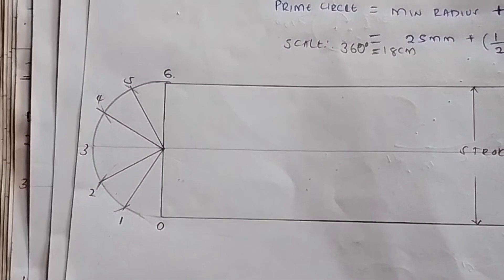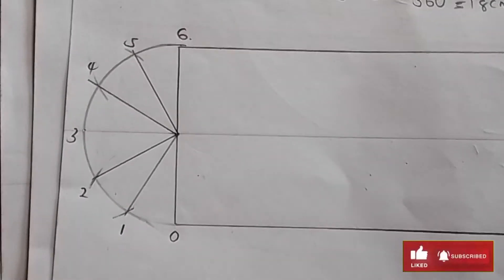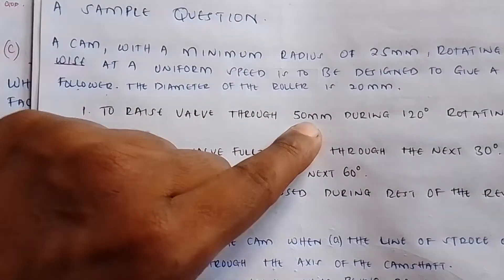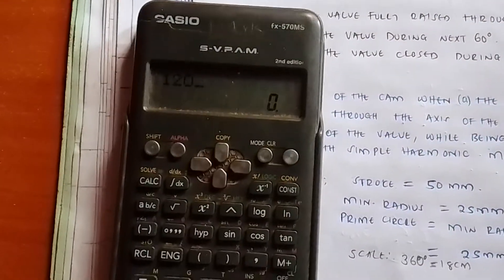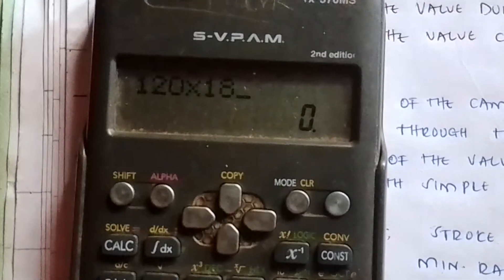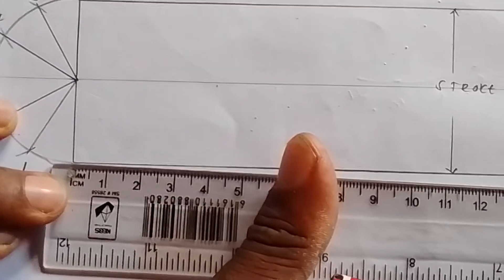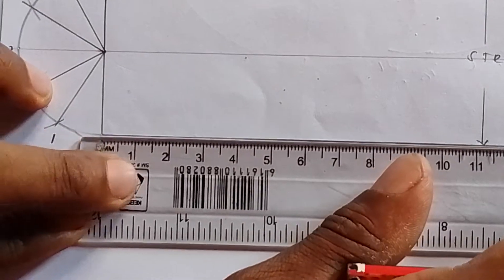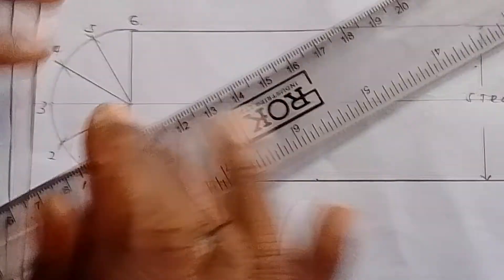Name your points 0, 1, 2, 3, 4, 5, 6. Now go back to the details given. The rise of the valve is 120 degrees. Using the scale where 360 degrees equals 18 centimeters: 120 times 18 divided by 360 gives 6 centimeters. Pick your ruler from the starting point and measure 6 centimeters — that is the measurement of the rise.